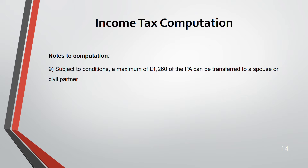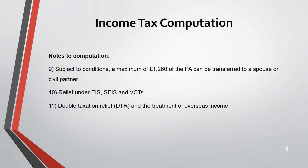Marriage allowance (Note 9): up to £1,260 of your personal allowance can be transferred to your spouse. Note 10: EIS, SEIS, and VCT are investment relief schemes — EIS for entrepreneurs, SEIS (Seed EIS) for early-stage ventures, VCT for venture capital. Note 11: Double taxation relief (DTR) — if you have overseas income and have already paid tax abroad, you only pay the difference in the UK rather than being taxed twice.